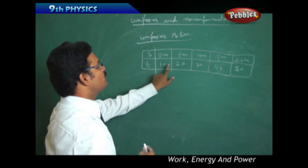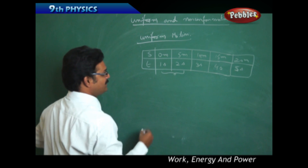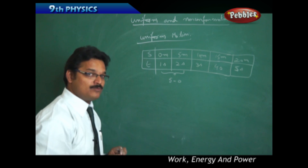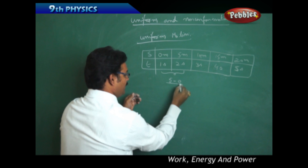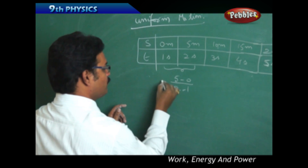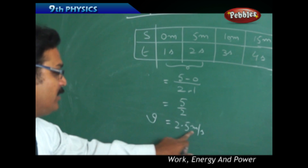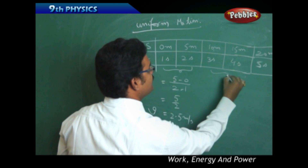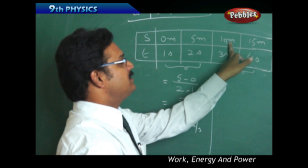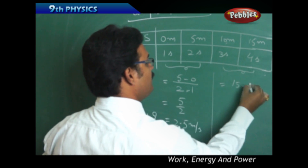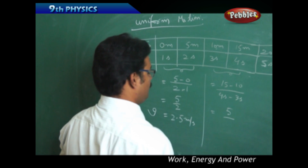Now observe the data table. From 1 second to 2 seconds, the distance changes from 0 to 5 meters, so the distance traveled is 5 meters. Speed equals final distance minus initial distance divided by final time minus initial time: 5 minus 0 divided by 2 minus 1, which gives 5 divided by 1 — that is 5 meters per second. Then from 3 seconds to 4 seconds: 15 minus 10 divided by 4 minus 3, again giving 5 meters per second.